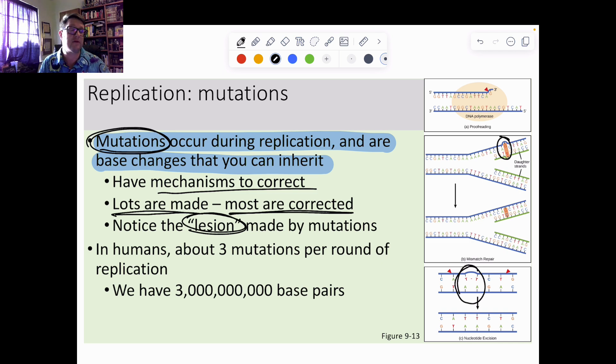And we can detect whether or not there's a mismatch or not because DNA is so uniform in its shape. So if you have anything that's weird, you have an abnormal shape and we can identify the abnormal shape.